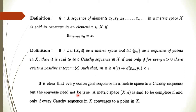However, the converse need not be true. For this we define a complete metric space: a metric space (X, D) is said to be complete if and only if every Cauchy sequence in X converges to a point in X.